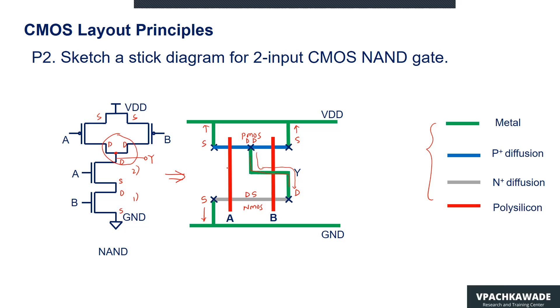The polysilicons, when drawn on the active areas, form the inputs of the circuit. That's how we complete this layout for the CMOS NAND gate.